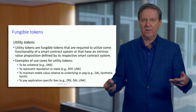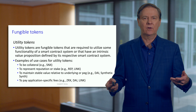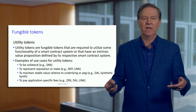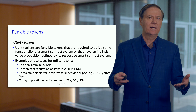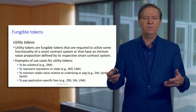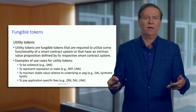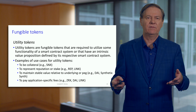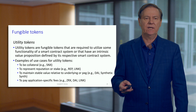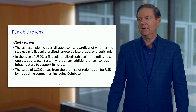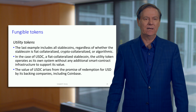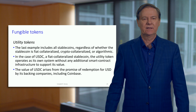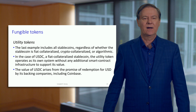A utility token could be used for collateral, reputation or staking, or as a stablecoin. I mentioned USDC — the decentralized version of a stablecoin would be something like DAI, which we'll talk about in great detail in the third course. All stablecoins are utility tokens in decentralized finance. It's also possible that a utility token is used to pay fees for a particular application.